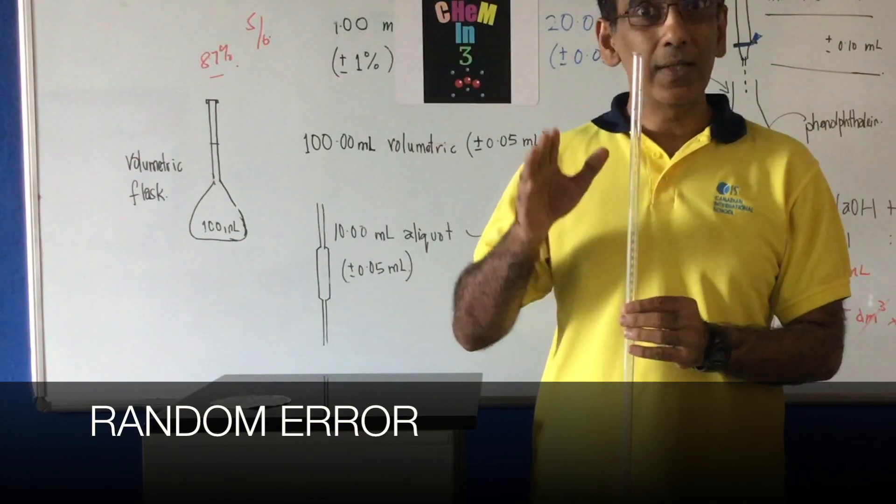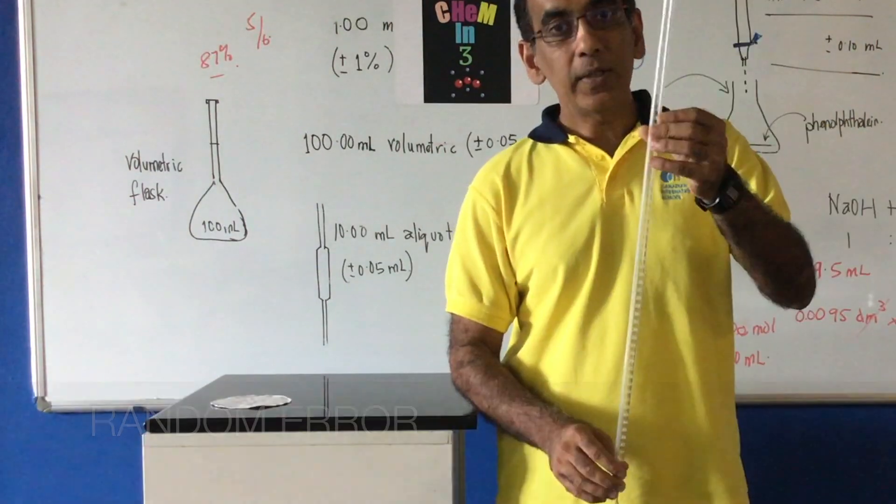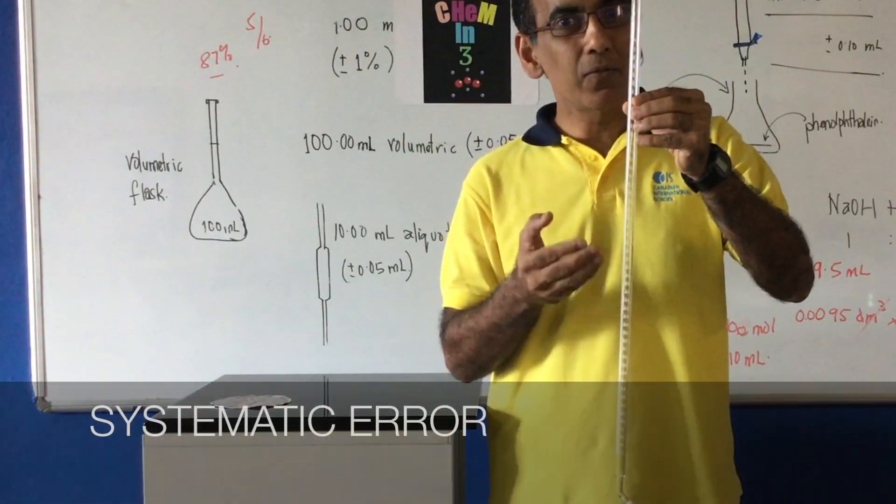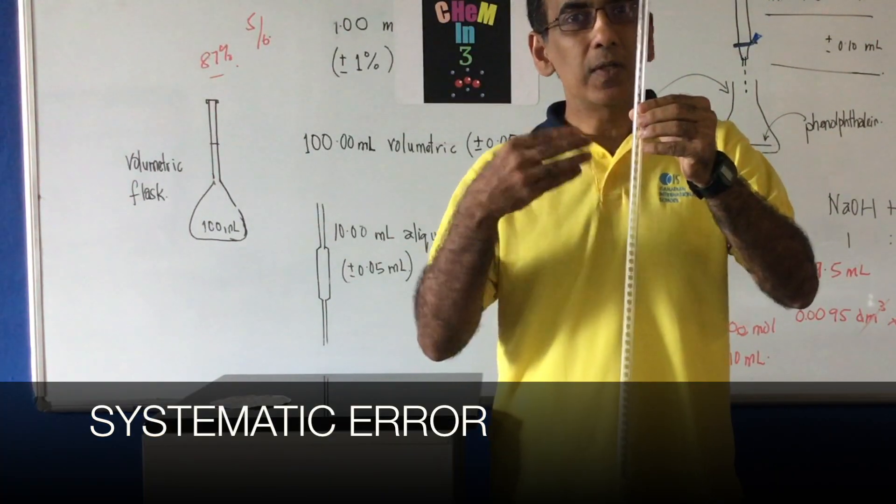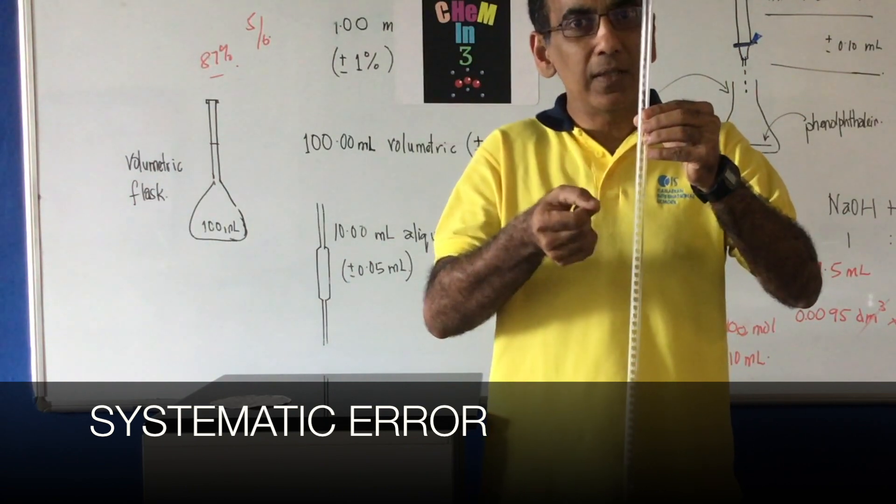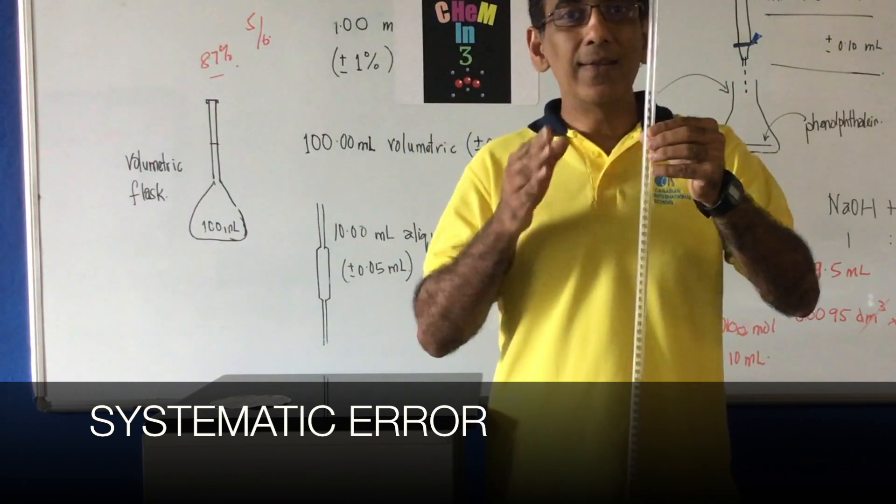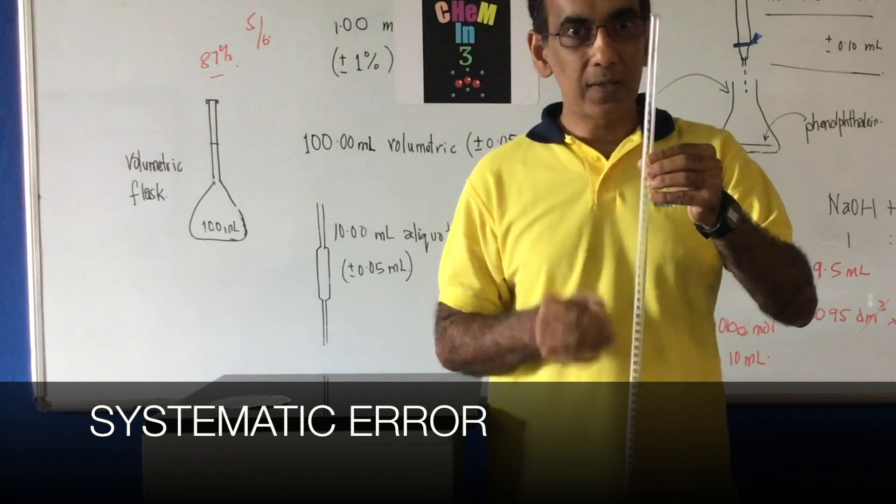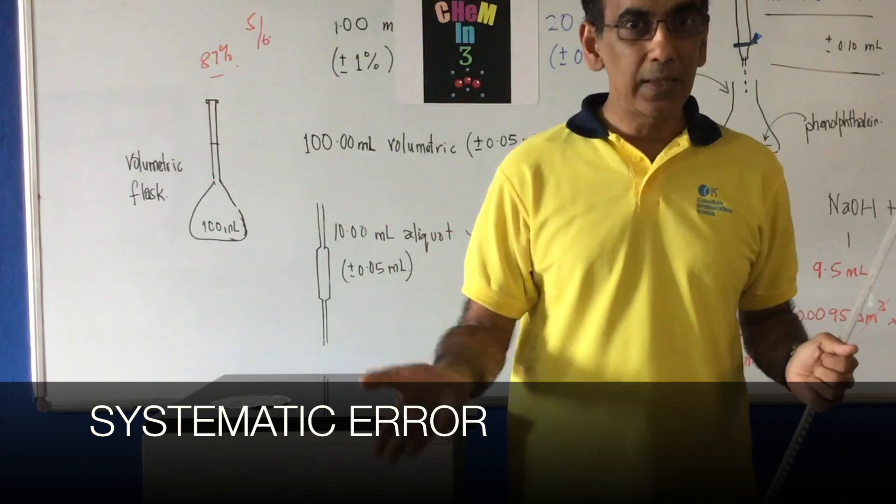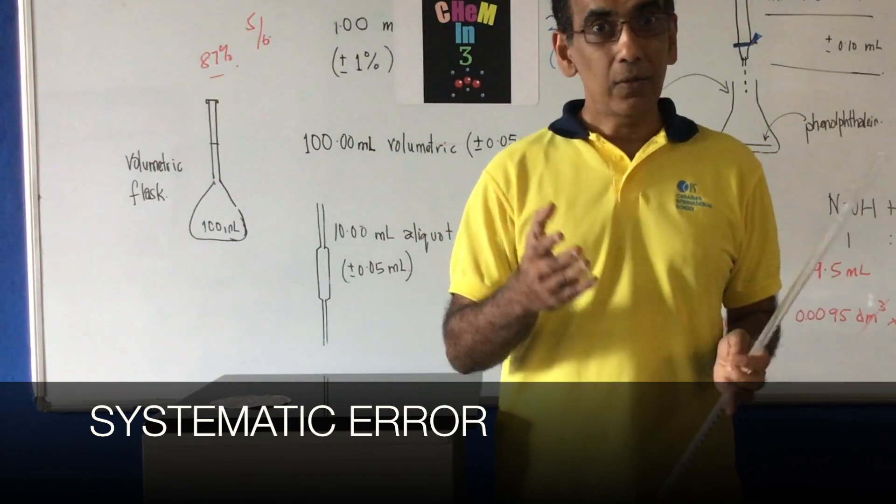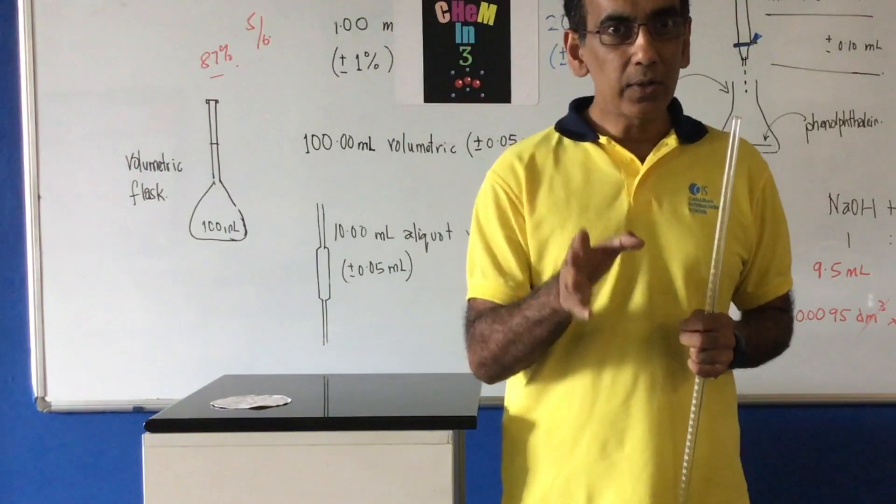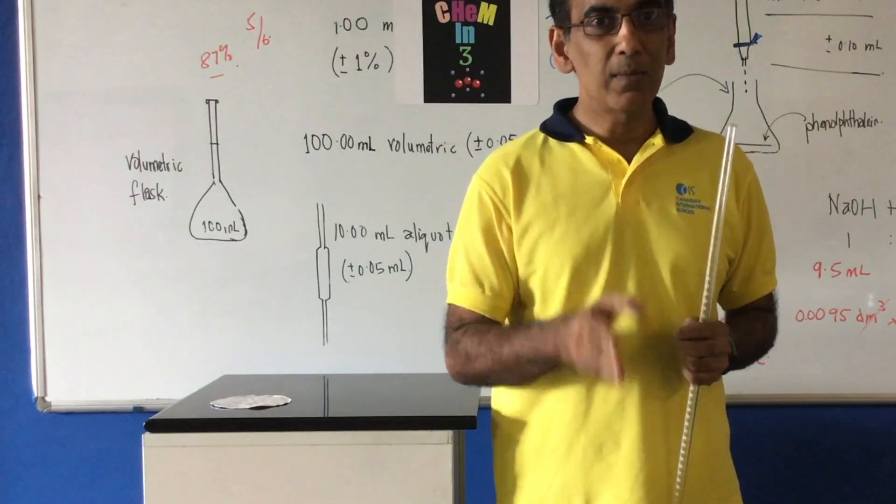But if this burette is not calibrated properly, then every time I take a reading with this burette, it would be subjected to some set factor, some built-in correction factor. And that type of error is systematic. Systematic errors usually come from poorly calibrated instruments like a balance or a pH meter or a burette. Let's move in now and take a closer look at random and systematic errors.